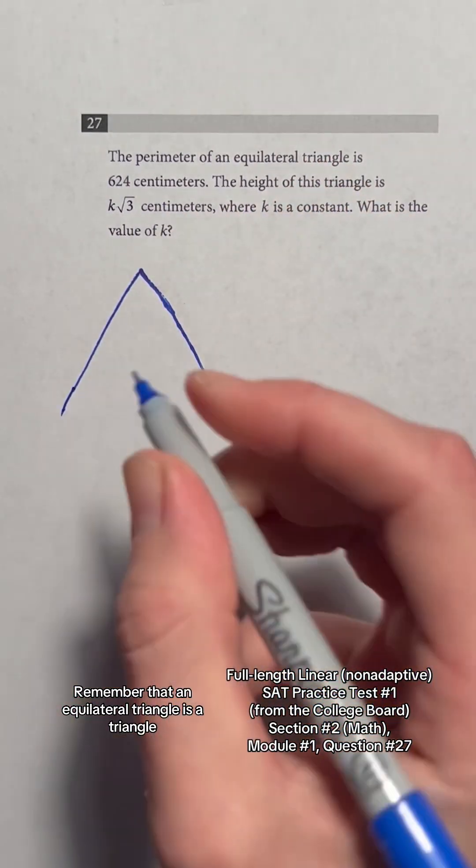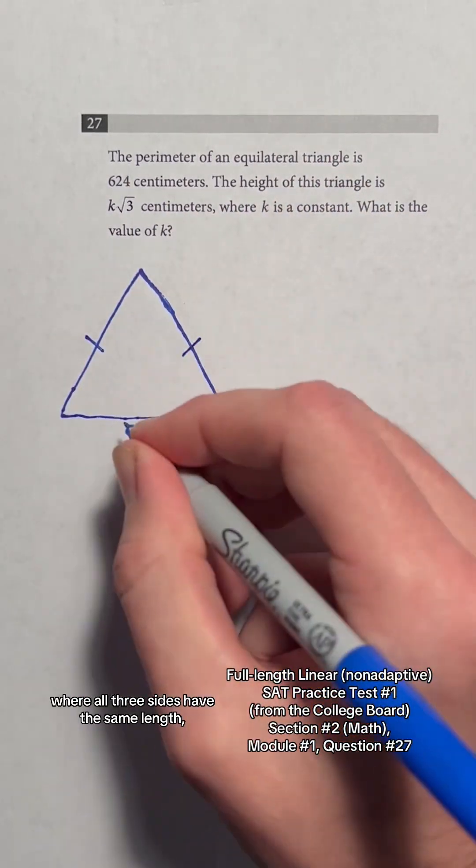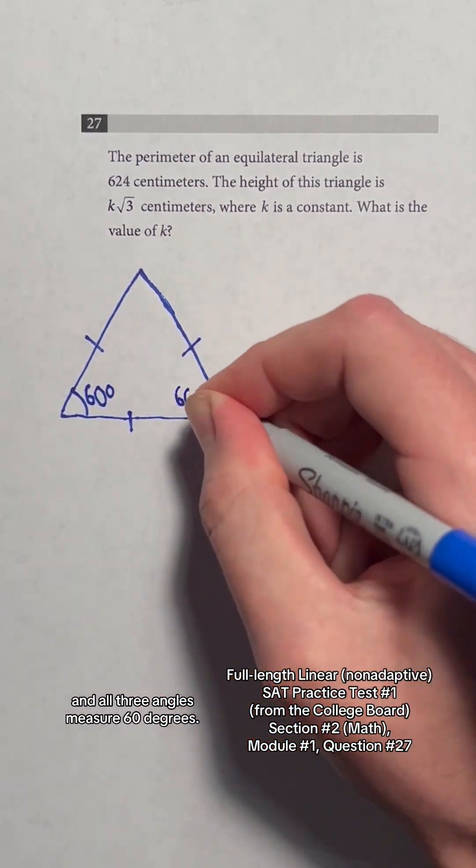Remember that an equilateral triangle is a triangle where all three sides have the same length and all three angles measure 60 degrees.